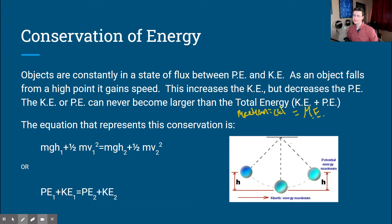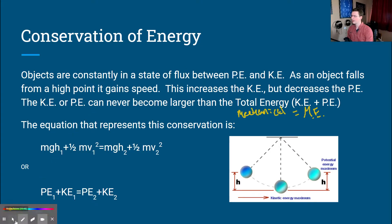The equation that represents this — much like our conservation of momentum equation from an earlier unit — looks really overwhelming at first. But if we break it down, we can see there's essentially a section one, a section two, and another section, so we end up with about four sections total.